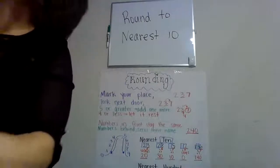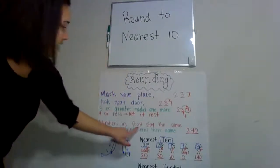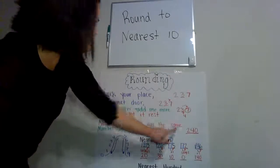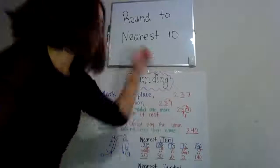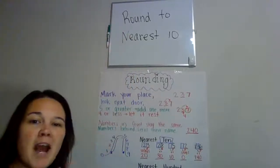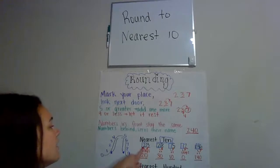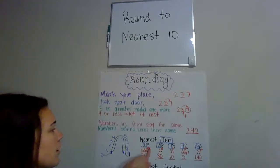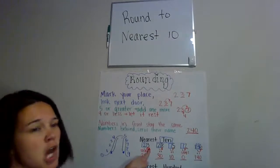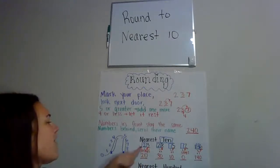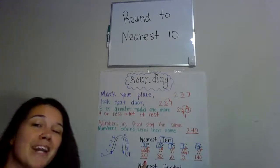Numbers in front stay the same; numbers behind, zero is their name. So rounding to the nearest 10 — if we have the number 23, we find our place, look next door. Is that five or bigger? No. Four or less. So we let the two rest. 23 rounds down to 20.